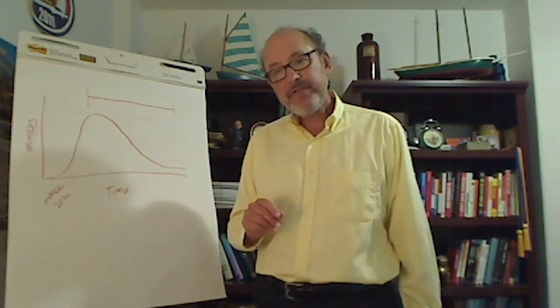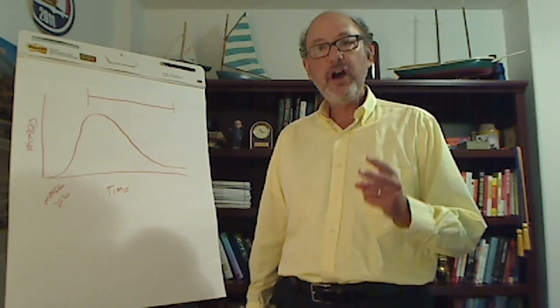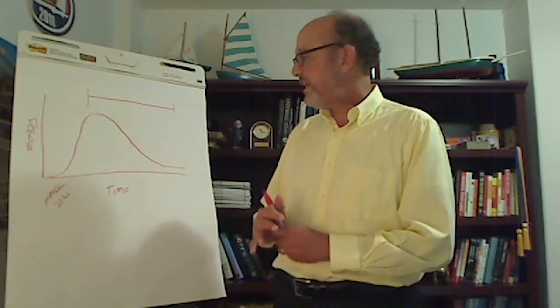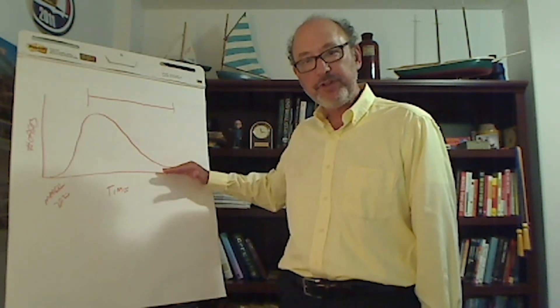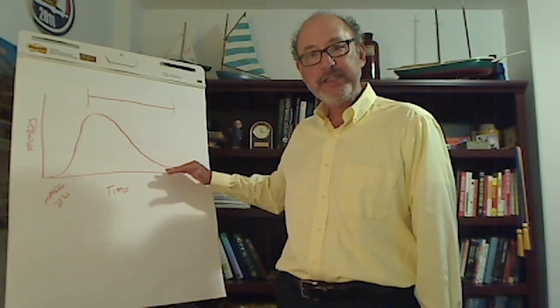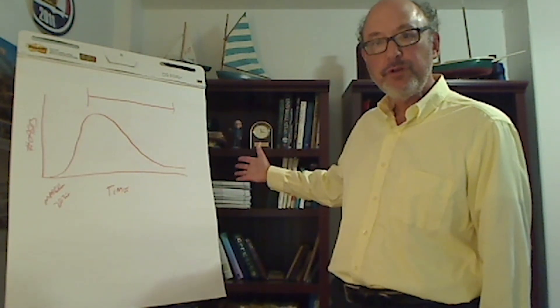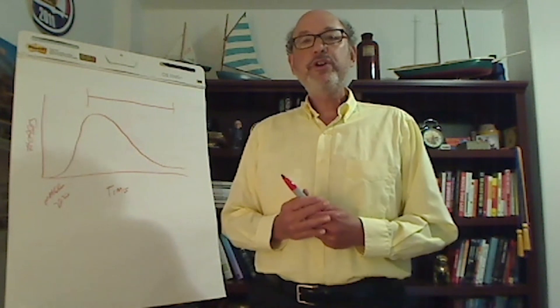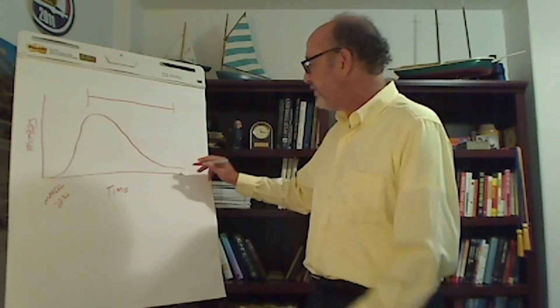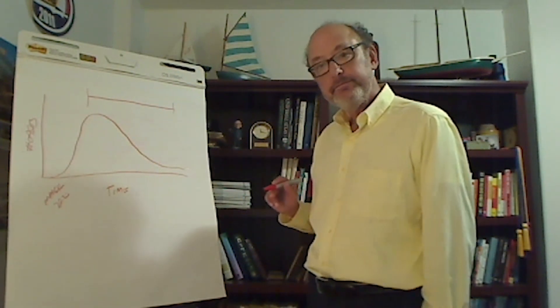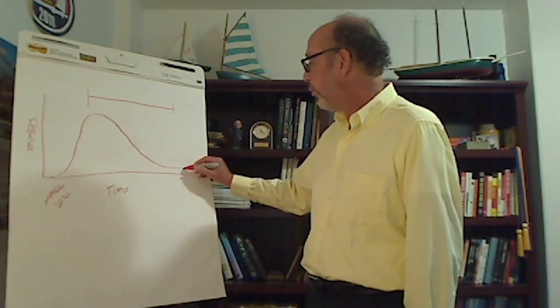So that gives us confidence to be able to say that social distancing and face mask use are key to keeping the case count low. It allows us to focus our efforts on how do we best keep the case count low. And then that helps inform us about what's going to happen in the future. If we do a good job of social distancing and face mask use, we're going to stay low. If we do a poor job of social distancing and face mask use, we're going to go up.